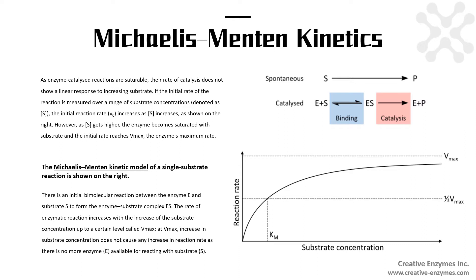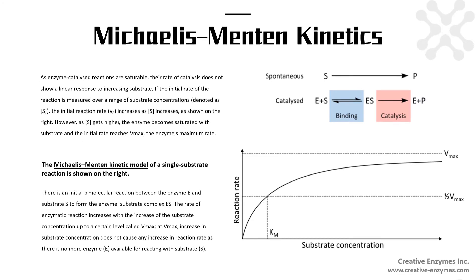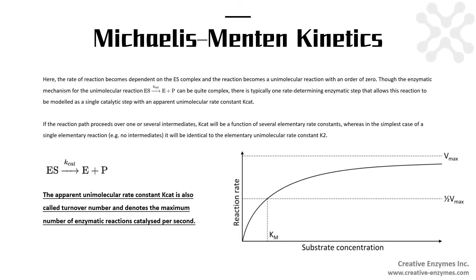The rate of enzymatic reaction increases with the increase of the substrate concentration up to a certain level called Vmax. At Vmax, increase in substrate concentration does not cause any increase in reaction rate as there is no more enzyme available for reacting with substrate. Here, the rate of reaction becomes dependent on the ES complex, and the reaction becomes a unimolecular reaction with an order of zero.